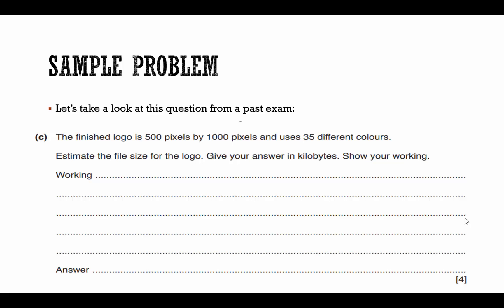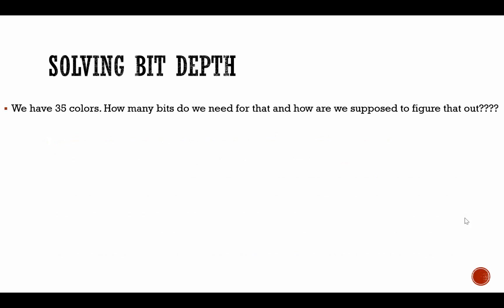So, the finished logo is 500 pixels by 1000 pixels. Perfect. And now I'm going to multiply those two numbers together. All I need is a bit depth and uses 35 different colors. Estimate the file size for the logo. Give your answer in kilobytes. Show your working. I don't see bit depth here. So, we have 35 colors, but how many bits do we need for that? And how are we supposed to figure that out?